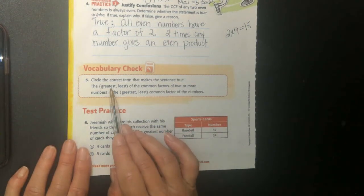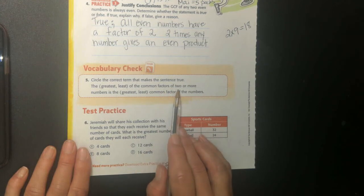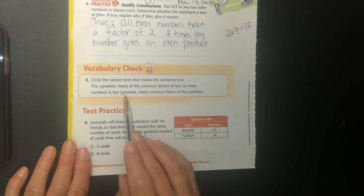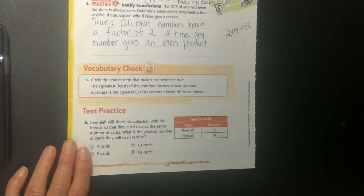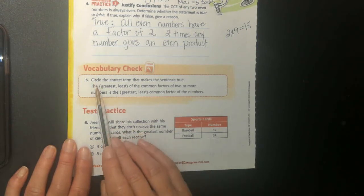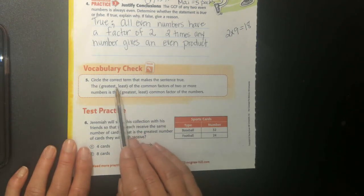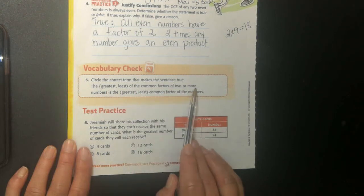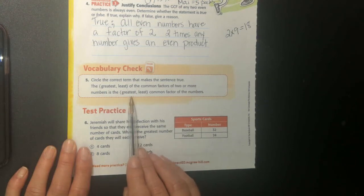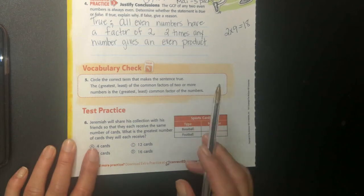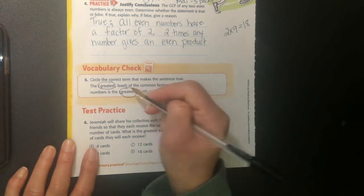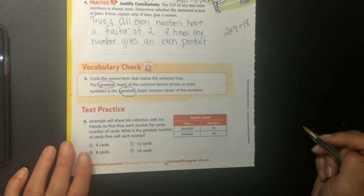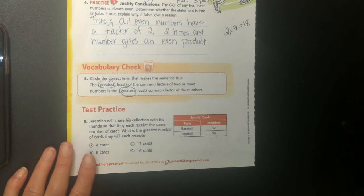The blank of the common factors of two or more numbers is the blank common factor of the numbers. So, the greatest of the common factors of two or more numbers is the greatest common factor of the numbers. Since we're talking about greatest common factors right now, the greatest number that they have in common is the greatest of the numbers.